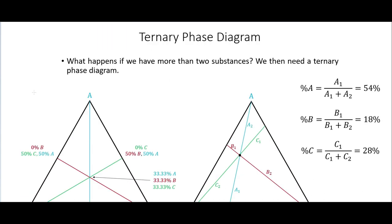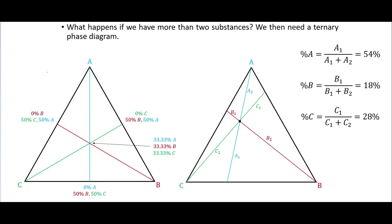Of course you can have more than two substances. With three substances you can use a ternary phase diagram, which looks like a triangle. The top corner is 100% A, the bottom-left corner is 100% B, and the bottom-right corner is 100% C. A point where the green line meets the B–C edge means 0% C; if it's halfway between A and B, that's 50% A and 50% B.